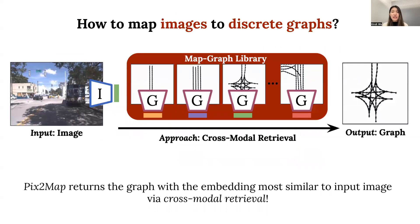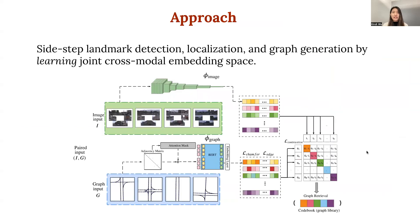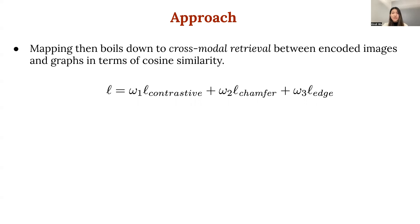To solve the key challenge of how to map images to discrete graphs, Pixel Map returns the graph with the embedding most similar to the input image via cross-modal retrieval. We construct the graph encoder inspired by transformer architecture, where our encoder treats lane nodes as a collection of tokens and edges as masks for attention processing. The graph encoder computes a graph embedding vector for each street map in a batch, and the image encoder outputs an image embedding for the corresponding image stack. We then build a similarity matrix that contrasts the image and graph embeddings, using the adjacency matrix of a given graph as the attention mask for our transformer-based graph encoder. The mapping boils down to cross-modal retrieval between encoded images and graphs in terms of cosine similarity.